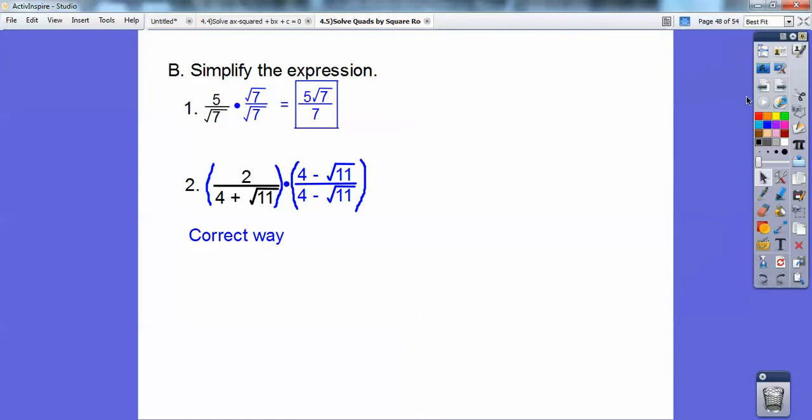So I'm multiplying it by 1, and what happens is when I multiply conjugates with each other, x plus y times x minus y, it becomes x squared minus y squared. Remember that? So here's my x plus y, x minus y. So here's my x squared minus y squared. And then go ahead and distribute this 2 through on top, and I get 8 minus 2 root 11.